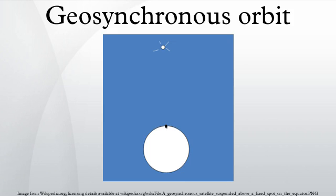A geosynchronous orbit is an orbit around the Earth with an orbital period of one sidereal day, intentionally matching the Earth's sidereal rotation period. The synchronization of rotation and orbital period means that, for an observer on the surface of the Earth, an object in geosynchronous orbit returns to exactly the same position in the sky after a period of one sidereal day.